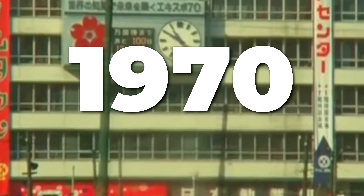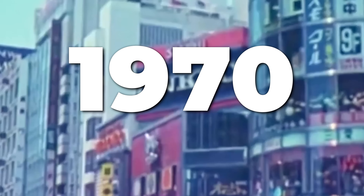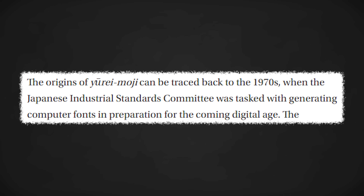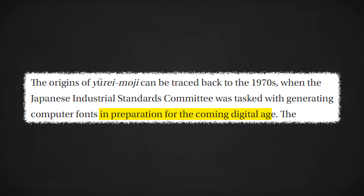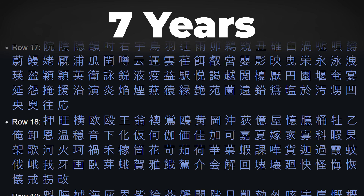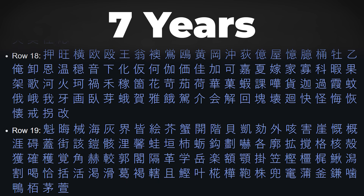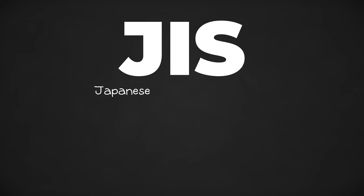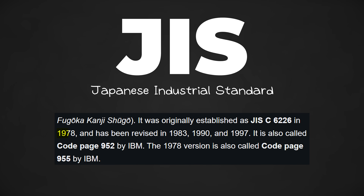The characters obviously aren't really spirits that just pop into existence, so they had to come from somewhere. All the way back in the 70s, there was a clear need to have a good way to write Japanese on a computer. In around 7 years, they were able to compile a list of nearly 7,000 characters that would be the base of digital kanji. This would become the JIS encoding, standing for Japanese Industrial Standard, established in 1978.